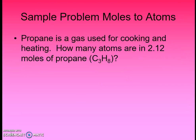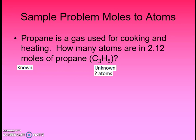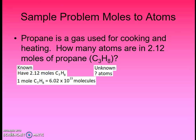We can also use this relationship in the other direction — from moles to atoms. Looking at propane, C₃H₈, used in gas grills for combustion, releasing heat exothermically. We have 2.12 moles of propane. How many atoms are there? 'How many atoms' is our unknown. We're given 2.12 moles of propane. Relating atoms and moles, we know 1 mole equals 6.02 times 10 to the 23rd representative particles. But propane, C₃H₈, is a molecule, so there are 6.02 times 10 to the 23rd molecules of propane per mole. We still need to get to atoms, so we look at propane's makeup: 3 carbon atoms and 8 hydrogen atoms gives us 11 atoms total per molecule.